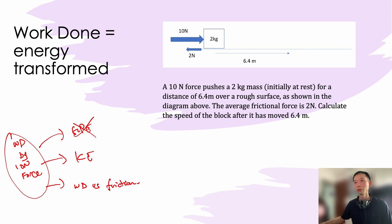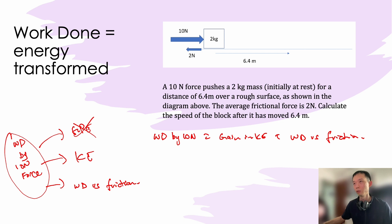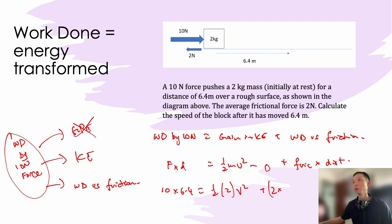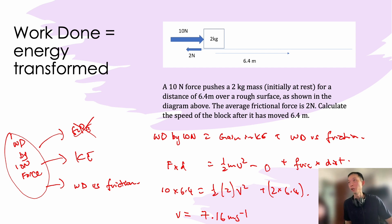Using this energy flow idea, we construct the equation: work done by the 10-newton force equals gain in KE plus work done against friction. Converting to formulas: force × distance equals ½mv² minus initial KE (zero, starting from rest) plus frictional force × distance. Substituting values: 10 × 6.4 equals ½ × 2 × v² plus 2 × 6.4. Solving for v, we get a final speed of 7.16 meters per second.